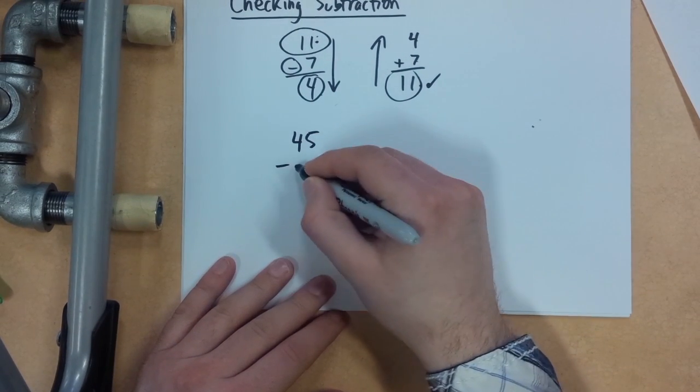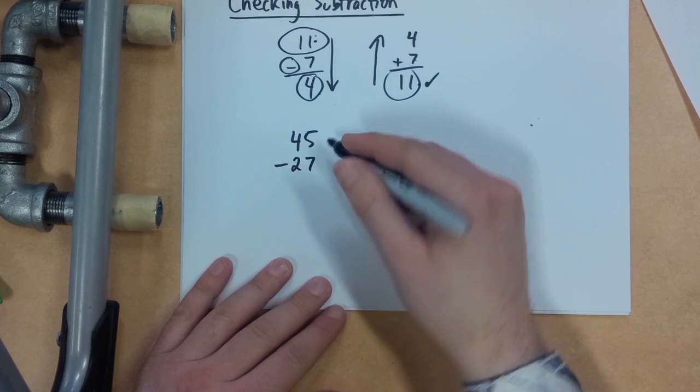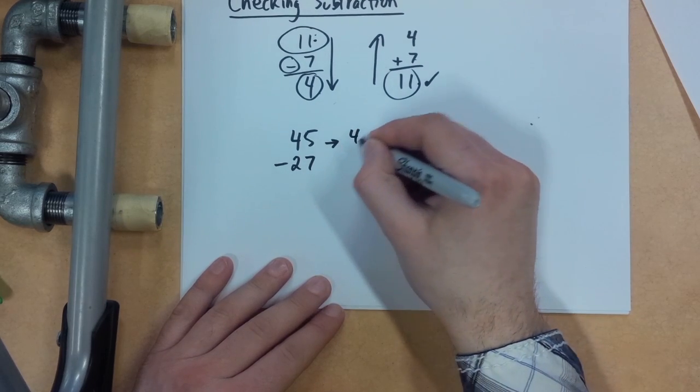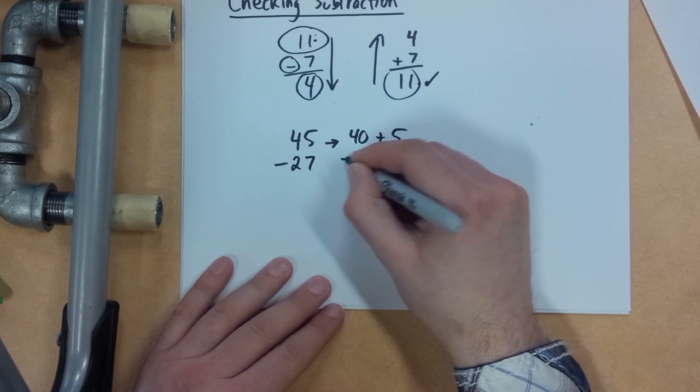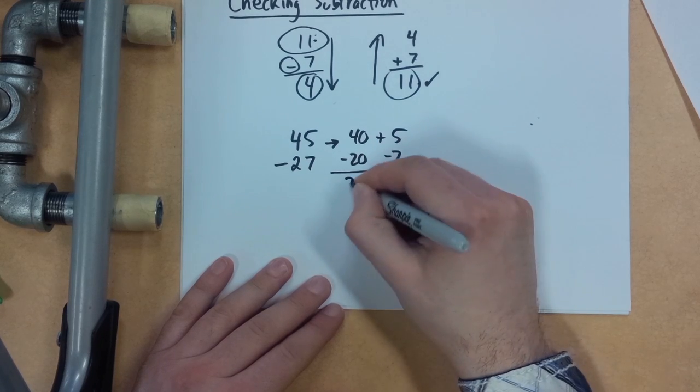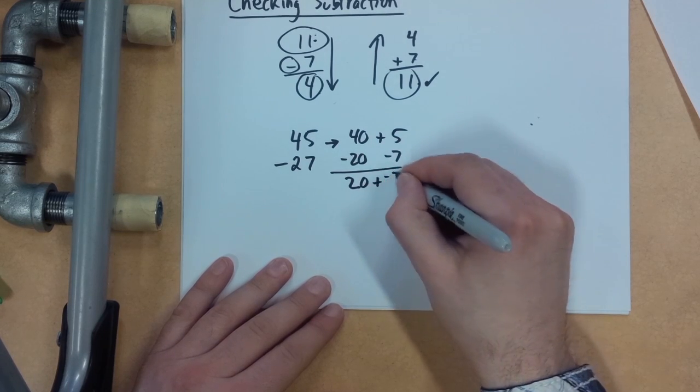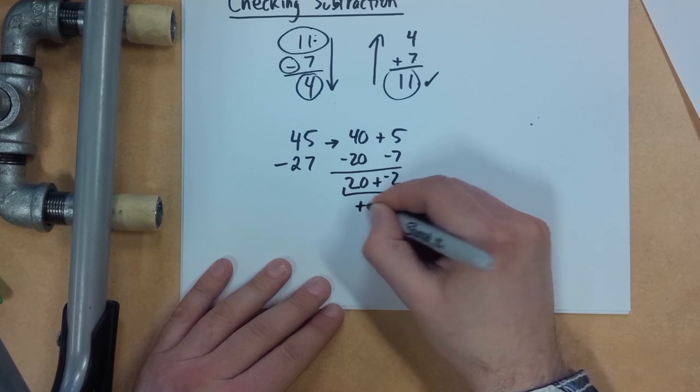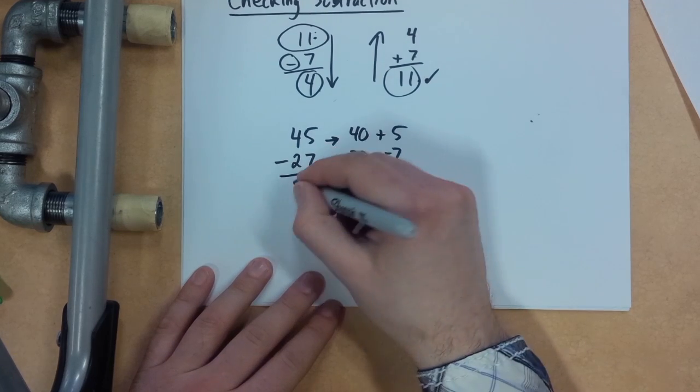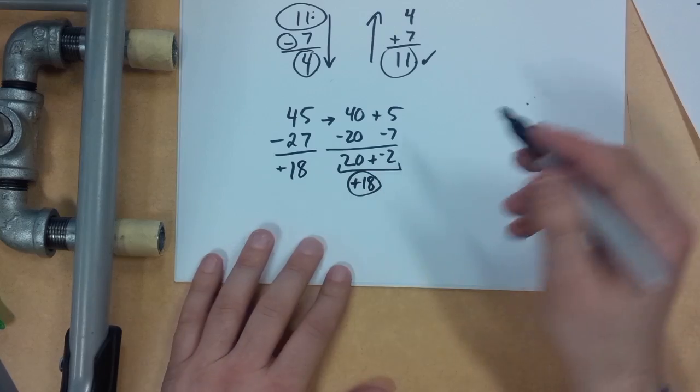45 minus 27. Okay, so how am I going to do this? I'm going to do it that other way: minus 20 minus 7, so that's 20 plus negative 2, so that's positive 18. Okay, so I'm going to say that that's 18, positive 18.